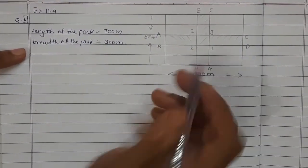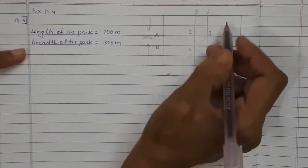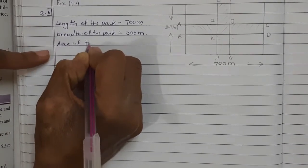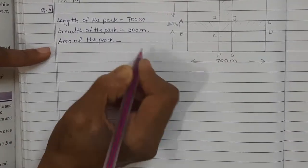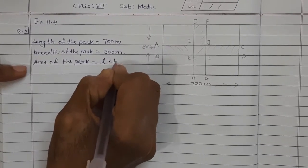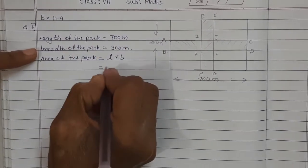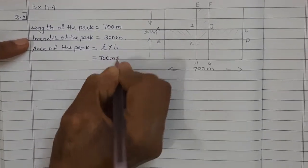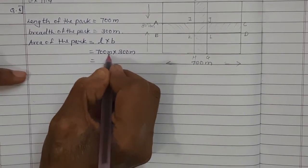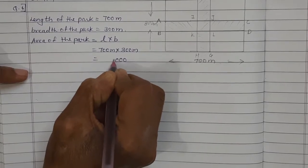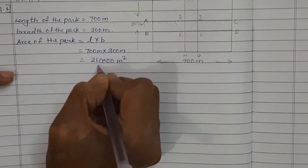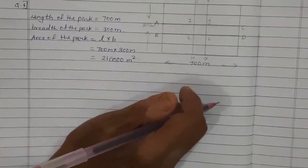So now first we will find the area of this park. Length and breadth of the park it is given. Area of the park — this is the rectangular park. Formula is length multiplied by breadth. Length is 700 meter and breadth is 300 meter. Count the number of zeros: 4 zeros, 7 threes are 21. So 2,10,000 meter square. We got the area of the park.